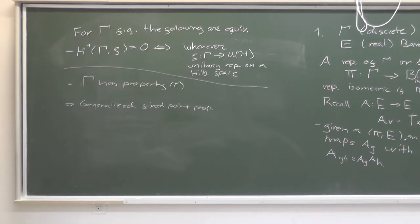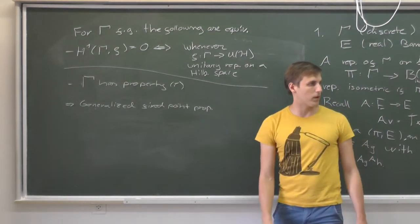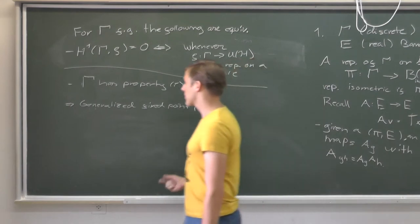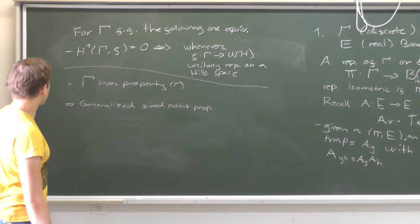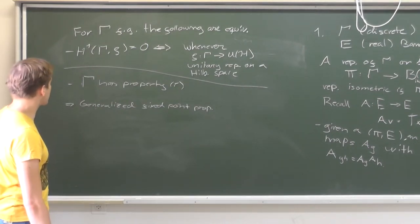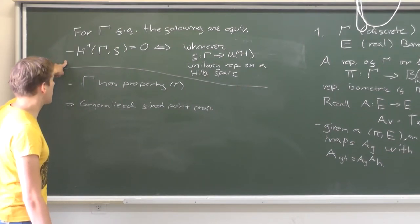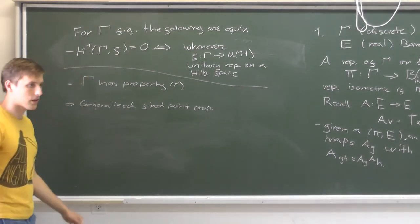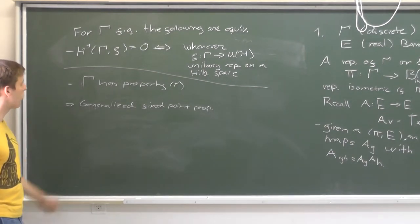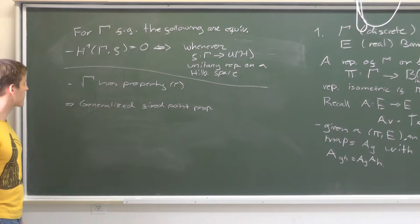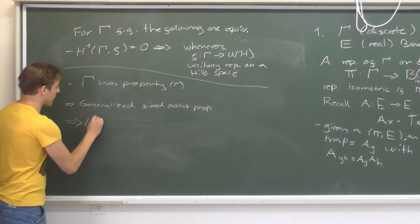Now we have a homological reformulation of our fixed point question posed in the beginning. We asked: when does every affine isometric action have a fixed point? It has a fixed point if this first cohomology vanishes for every isometric action. This is the cohomology we will start to probe, and to do this we will go into LP homology.